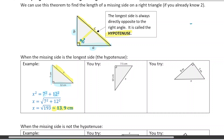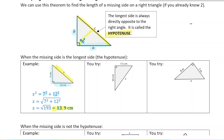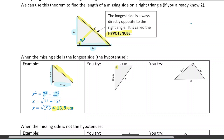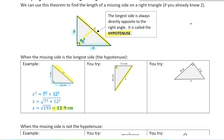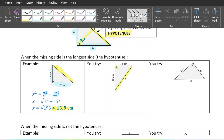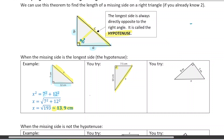I'm going to do one more. You can pause the video and try it yourself, or do it along with me. Here I have another right triangle with the right angle in the corner, so this length across from it is the hypotenuse — it's the longest side. So if I want to find the length of the hypotenuse, x squared is going to be equal to 10 squared plus 7.5 squared.